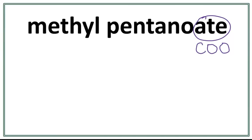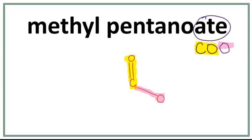When we draw this COO, we end up with carbon double bonding oxygen, which is this first CO right here, and carbon having a single bond with this second oxygen right here. So we have our functional group COO drawn in.